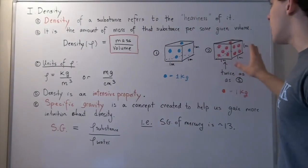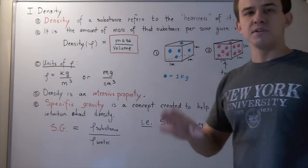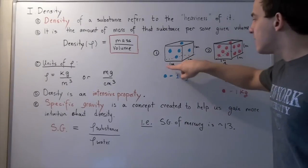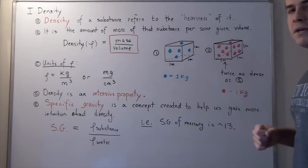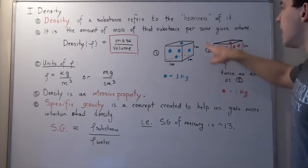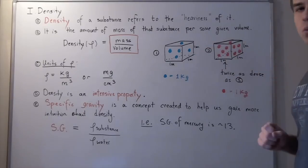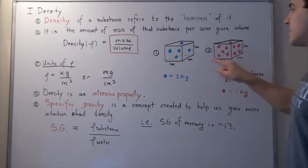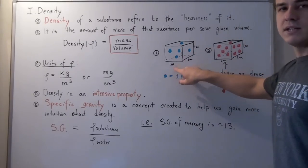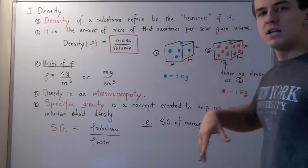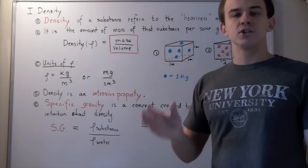Let's look at the following example. Suppose we have two cubes where each cube has a length of one meter, a width of one meter, and a height of one meter. So my volume in each case is one meter times one meter times one meter — one meter cubed.